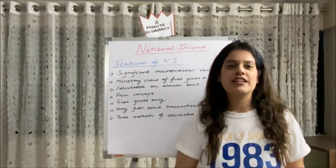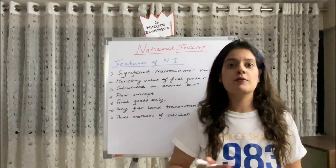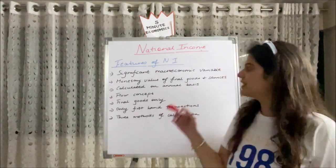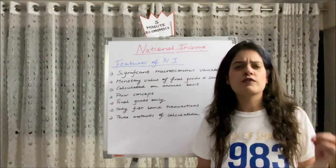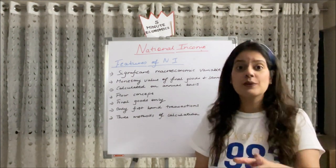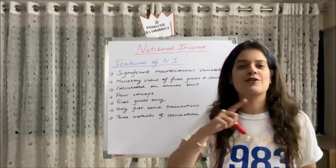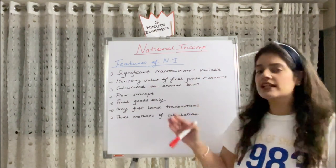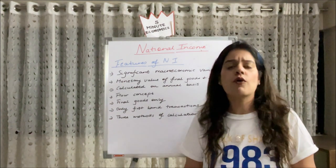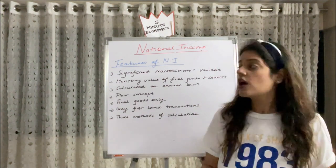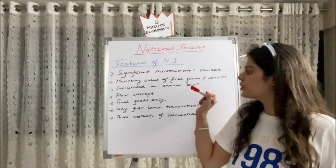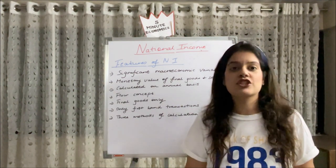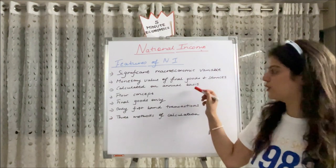Coming to the introduction of national income, before moving to the aggregates, let me explain the features of national income. First, it is one of the most significant macroeconomic variables — not microeconomic. Second, it tells us the monetary value of all final goods and services. Third, it is calculated on an annual basis, meaning from 1st April to 31st March of the next year.